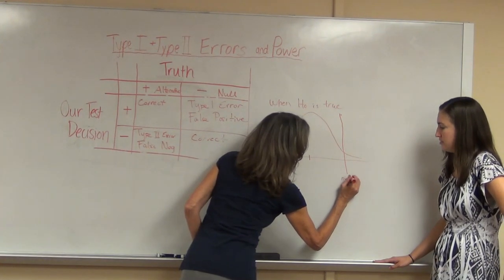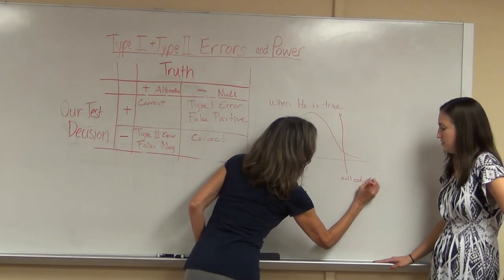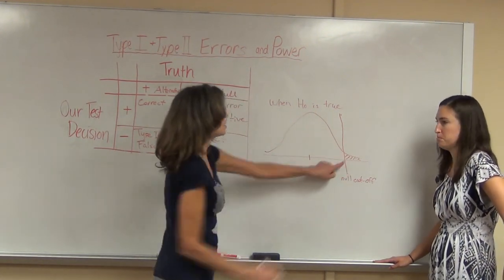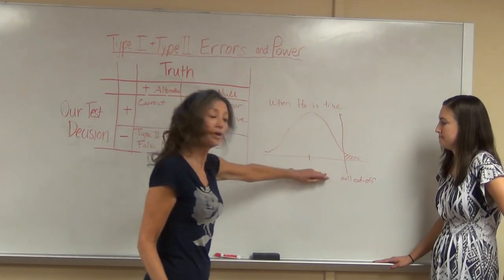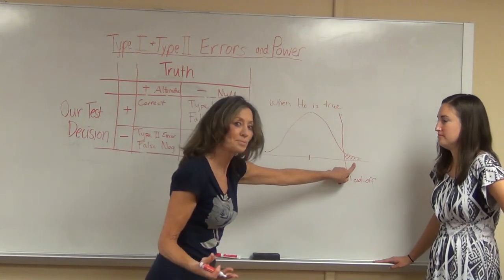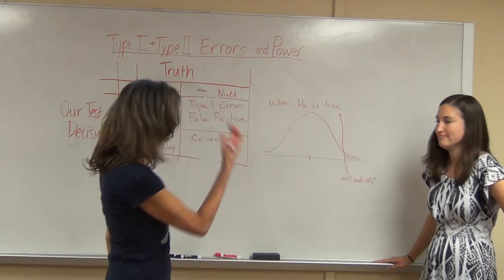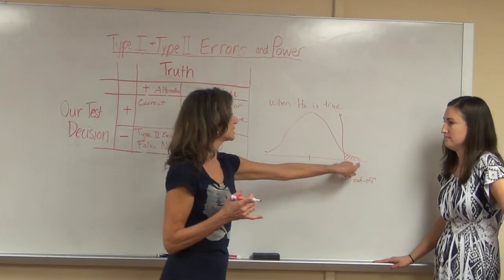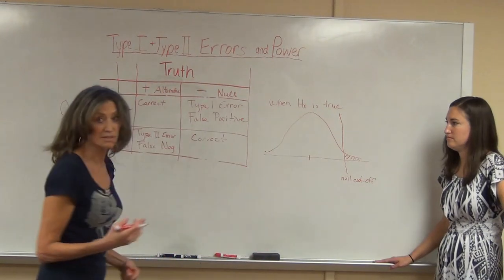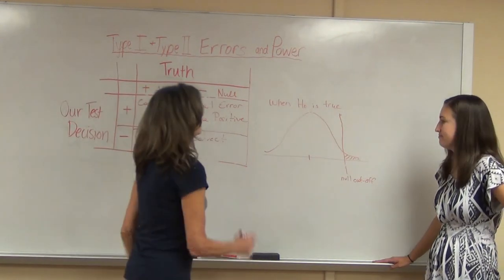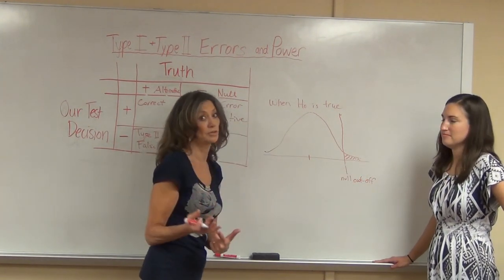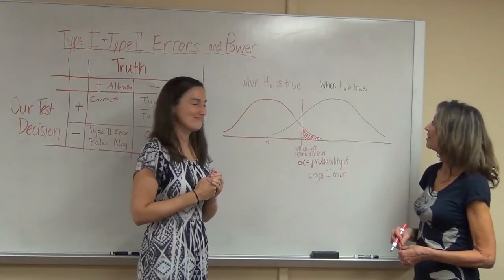So this is the null cutoff. If we set it at five percent, that area is five percent. Everybody in that tail — the null is true, no one is pregnant — so our type 1 error rate is five percent. When we set alpha equal to five percent, that's what we're doing: we're setting the probability of making a false positive, a false alarm. Like a smoke detector — that five percent would be all those times your alarm goes off saying 'fire' when you're just cooking.